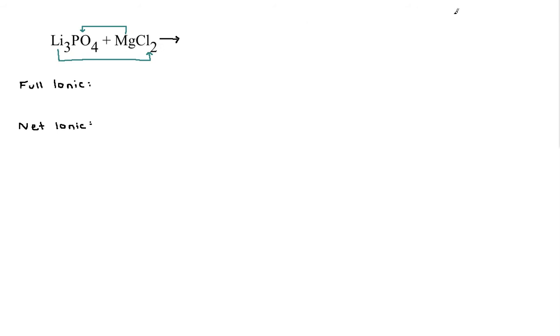So for Li, I'm going to combine it with Cl. Now, I've got to cross charges, so I'm going to say Li is a plus 1, Cl is a minus 1, and if you don't need to write this, it'll save you time. So the first thing that's going to be made is LiCl.